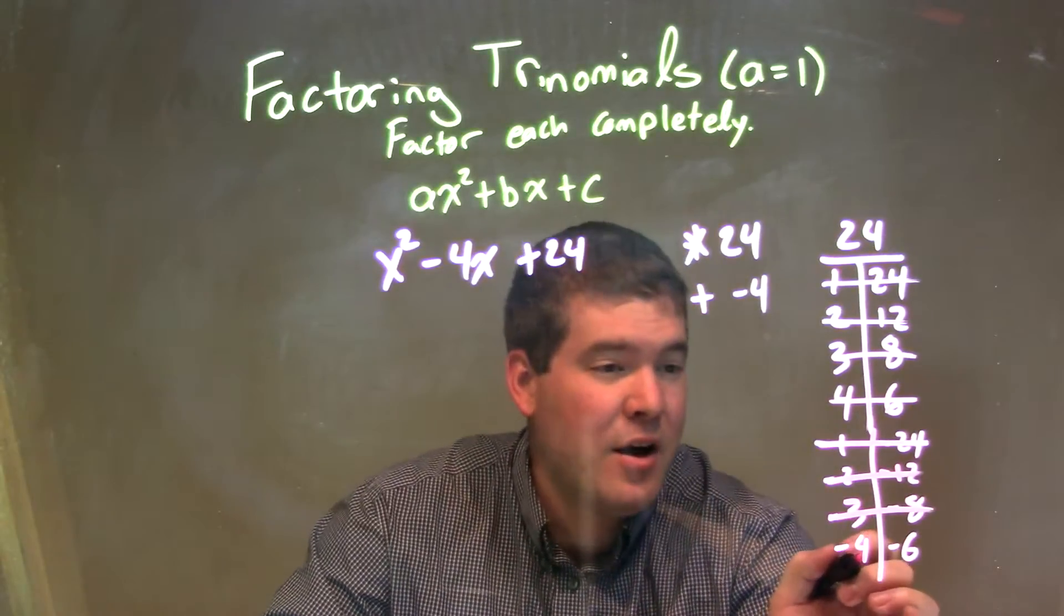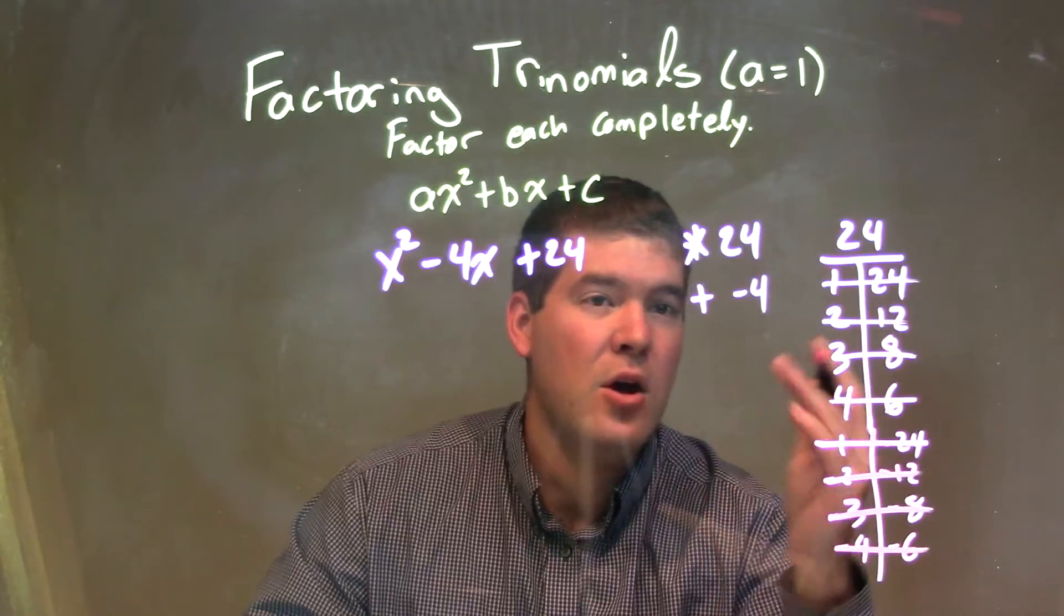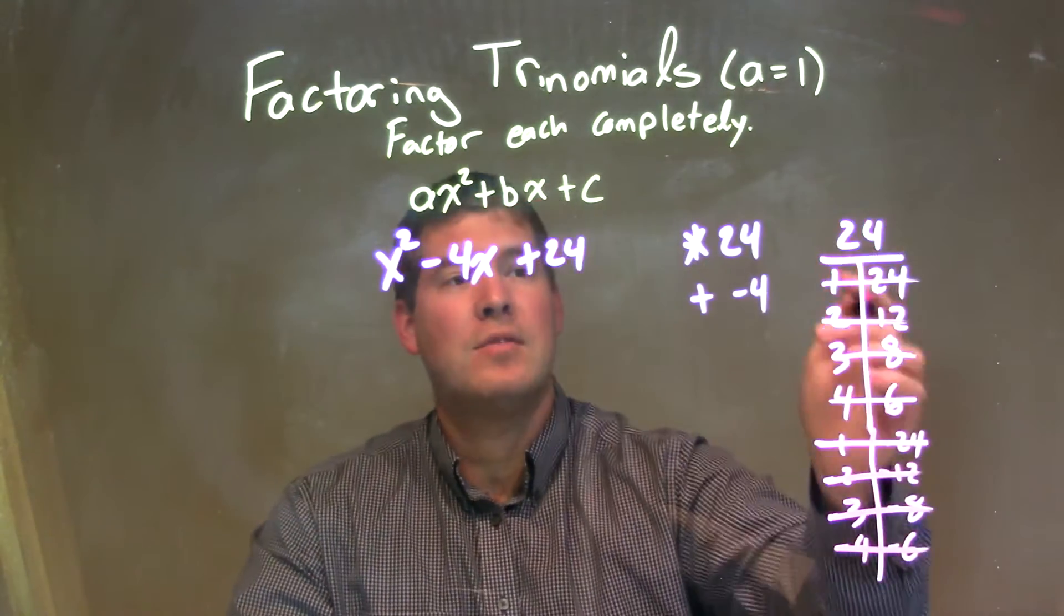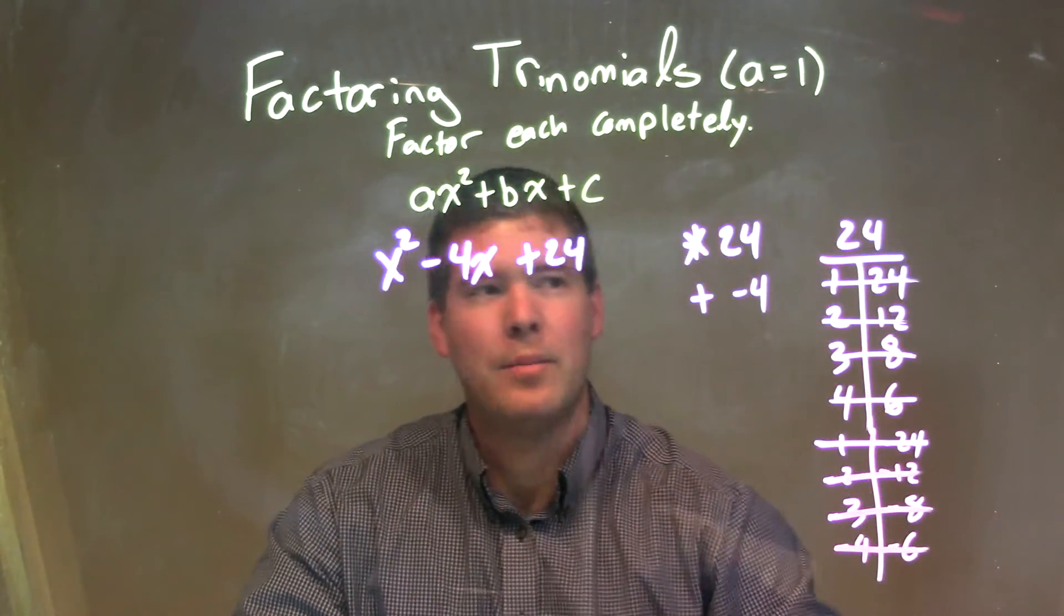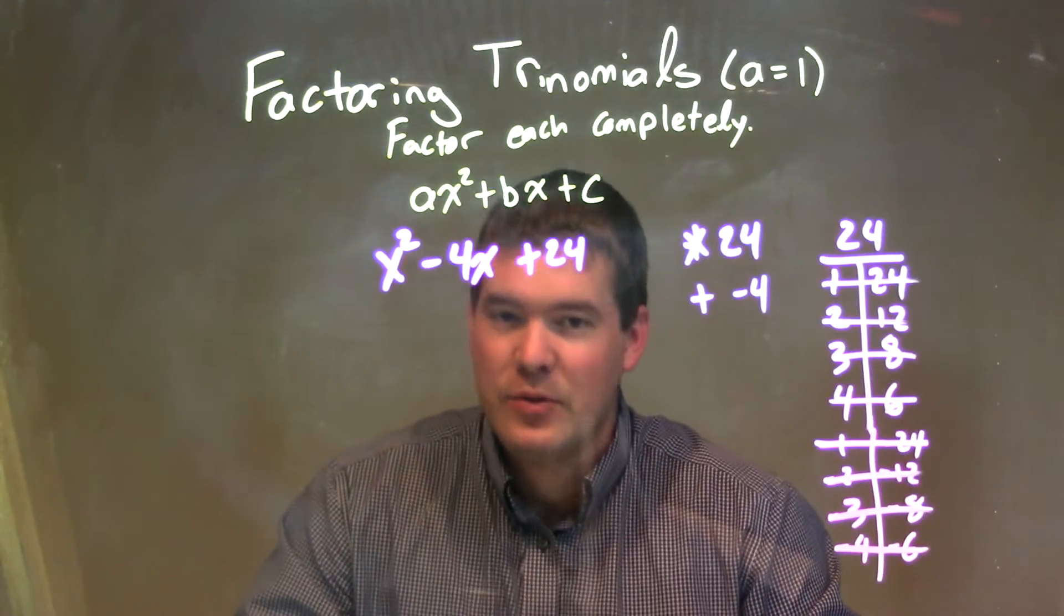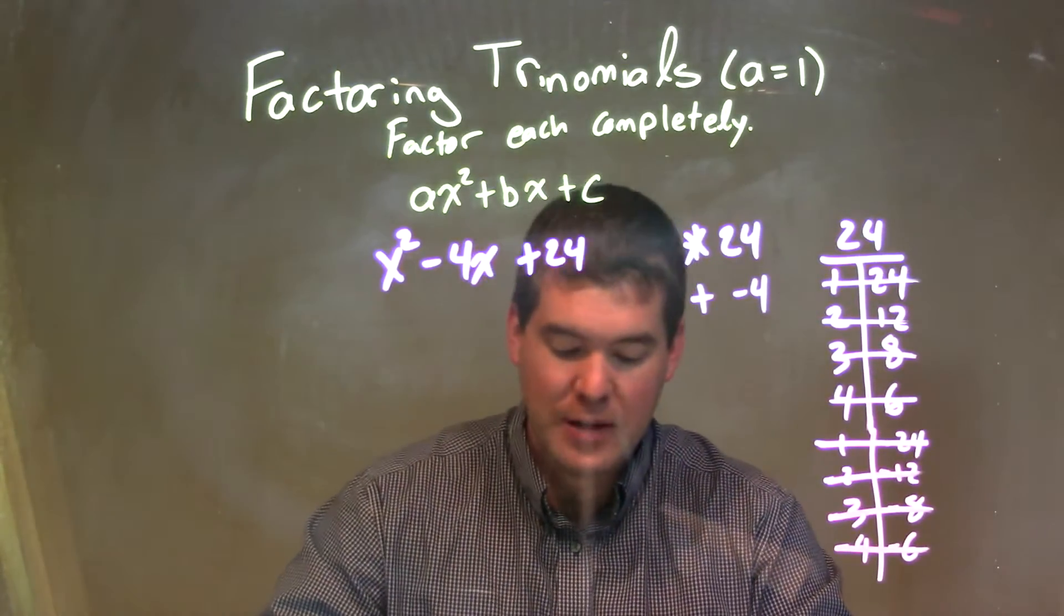And negative 4 plus negative 6 is negative 10. So none of these, none of all the numbers that can multiply to be a positive 24, added to be a negative 4.